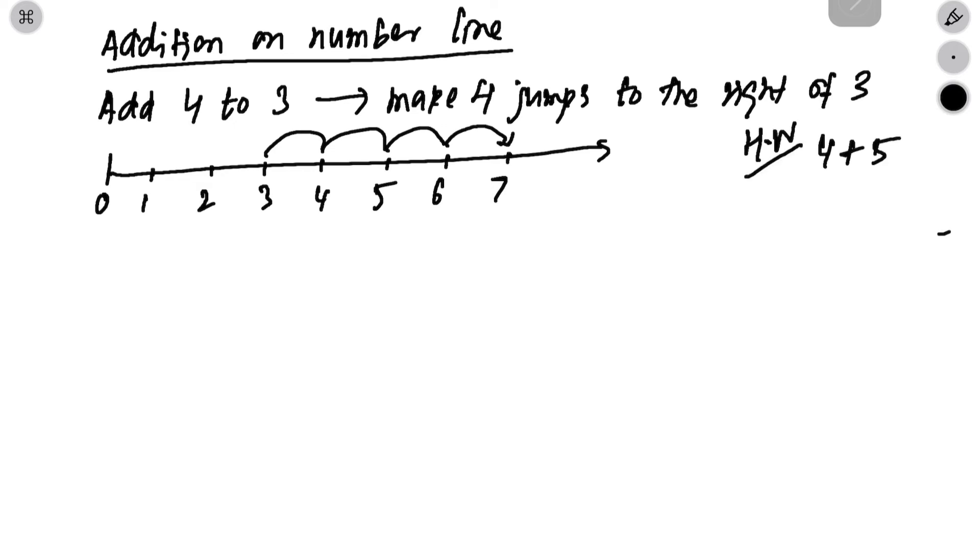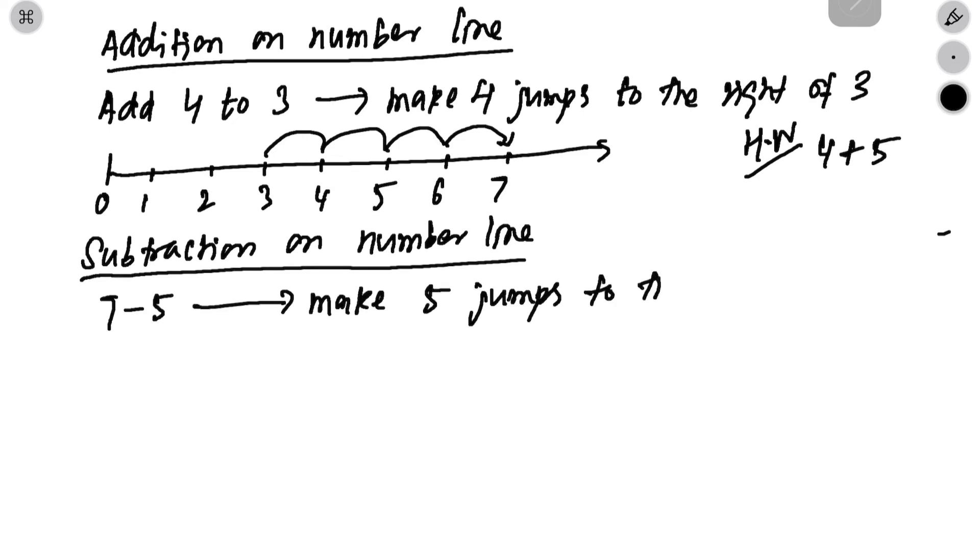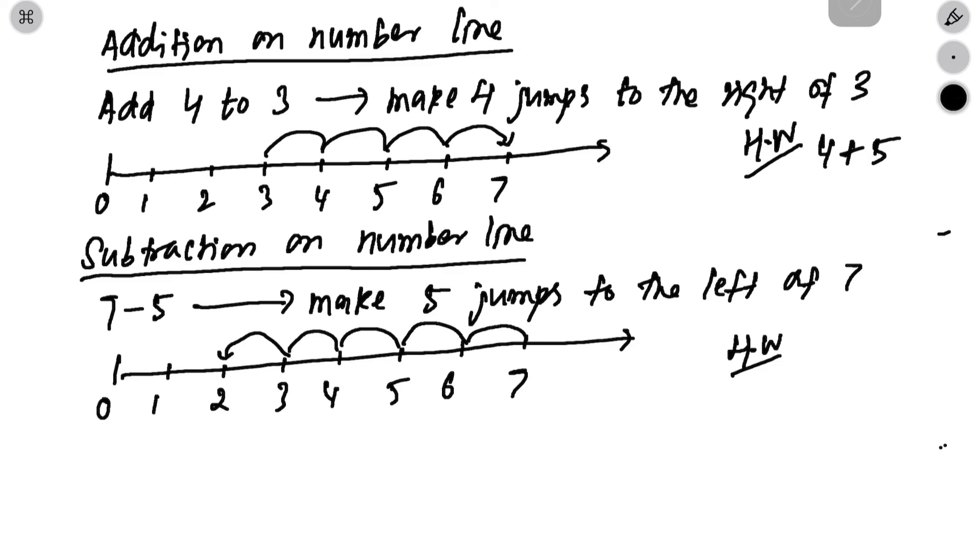For homework, you do 4 plus 5. Next, we will see how we will do subtraction on the number line. So, for example, if we have to do 7 minus 5, you have to make 5 jumps to the left of 7. So, it will be 6, 5, 4, 3, 2. So, 2 will be the answer. So, for homework, do 9 minus 6.